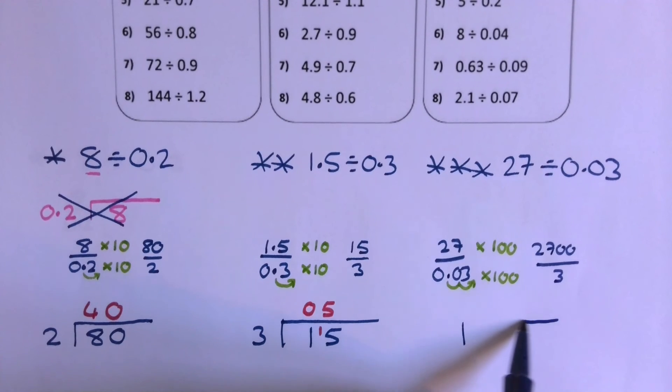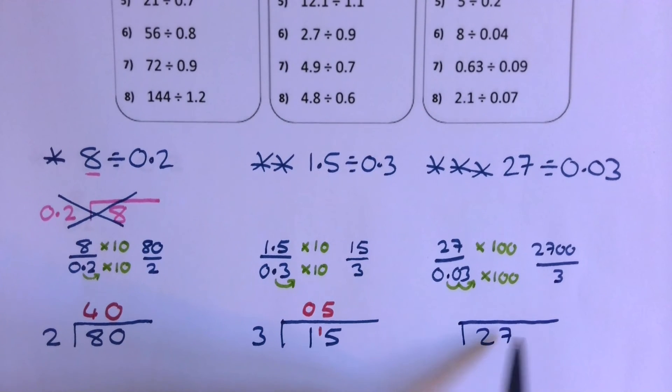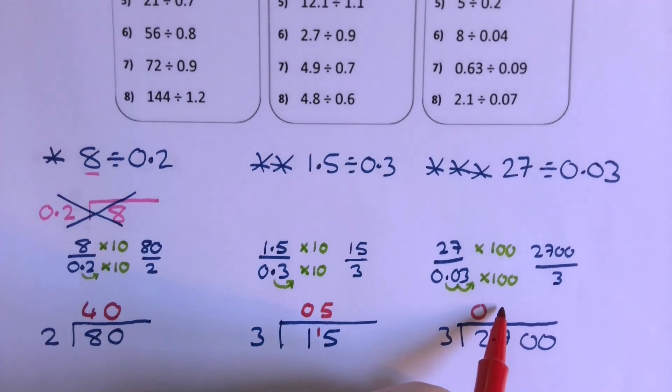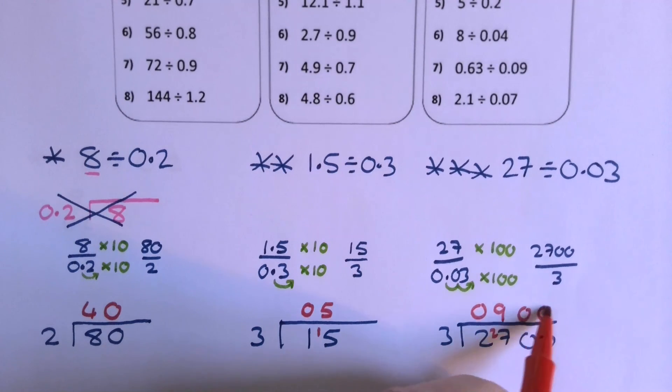So let's draw the bus stop. 2,700 divided by 3. 3s into 2 doesn't go, carry the 2. 3s into 27 goes 9 times. 3s into 0, nothing. 3s into 0, nothing. So the answer to that one is going to be 900, isn't it?